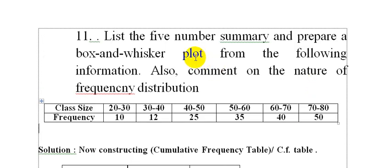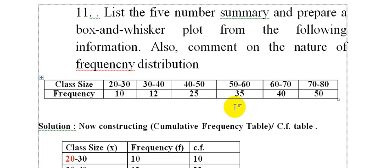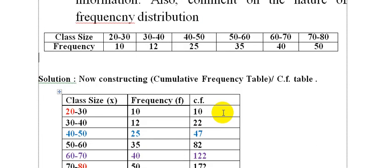The five-number summary consists of five values: number one is the smallest value, also called the lowest value. Then Q1, the median, Q3, and the largest value.